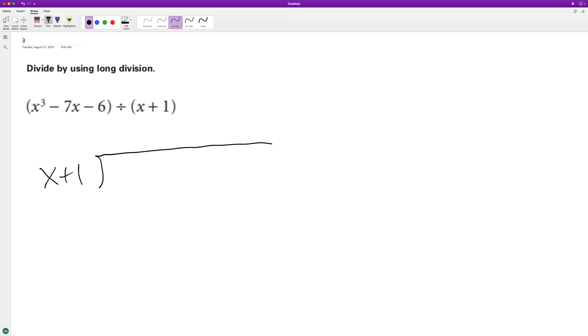x plus 1. The thing you gotta be careful about here is there's an x cubed and then just a single x term, so what we do is x cubed plus 0x squared, because we need a placeholder, otherwise you'll get the wrong answer, minus 7x minus 6.